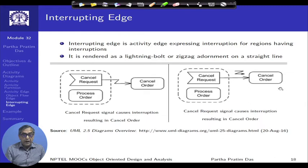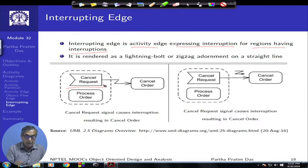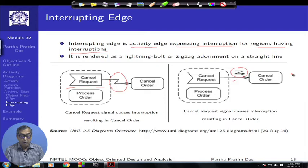There are also interrupting edges, which express interruption in regions having interruptions. When the normal designed flow cannot happen for some reason, you have an interruption. For example, a cancel request would disrupt the normal order processing flow. This is represented using a zigzag edge, or a straight edge with a zigzag adornment symbol on top, to indicate an interrupting edge in the activity diagram.